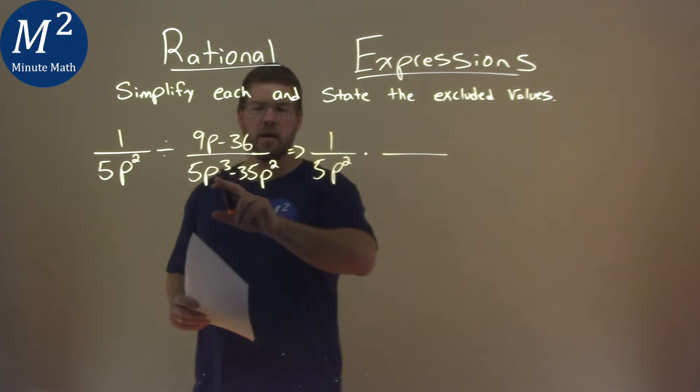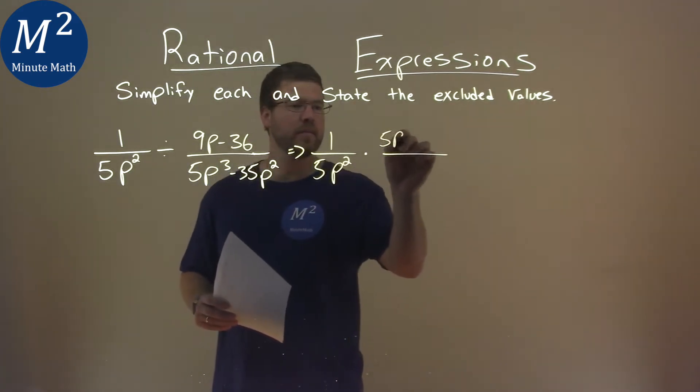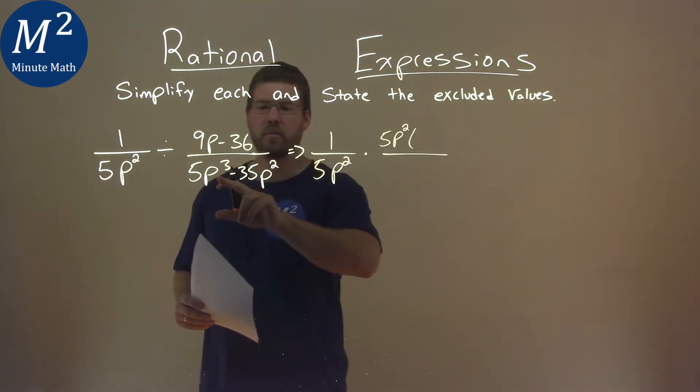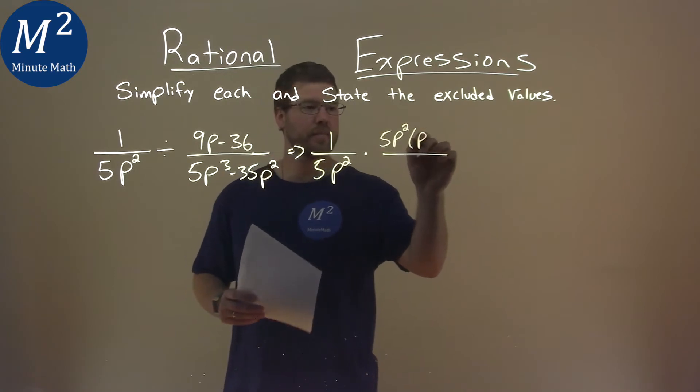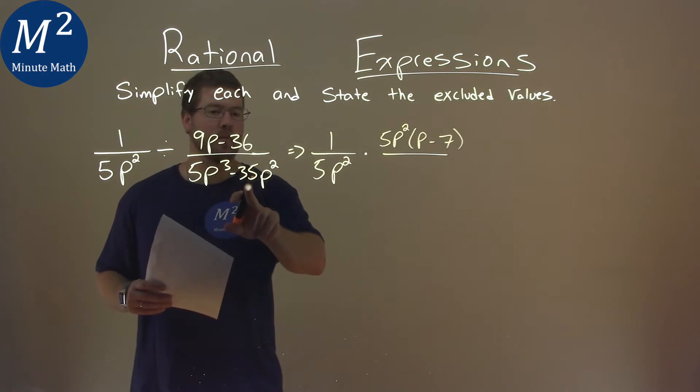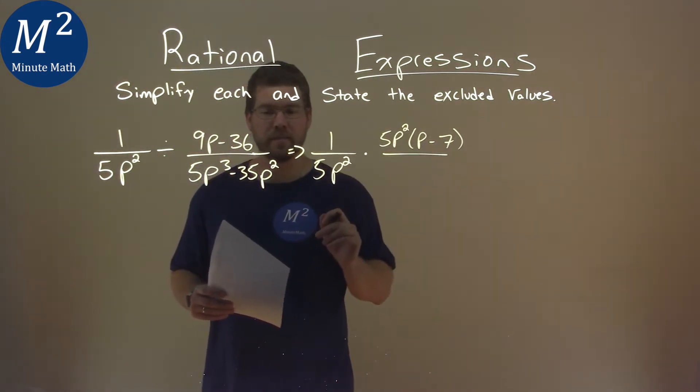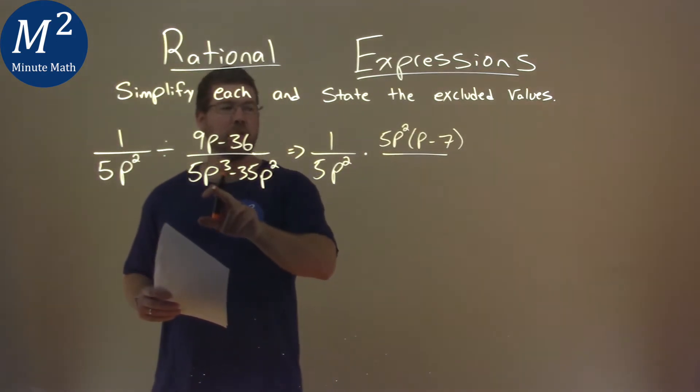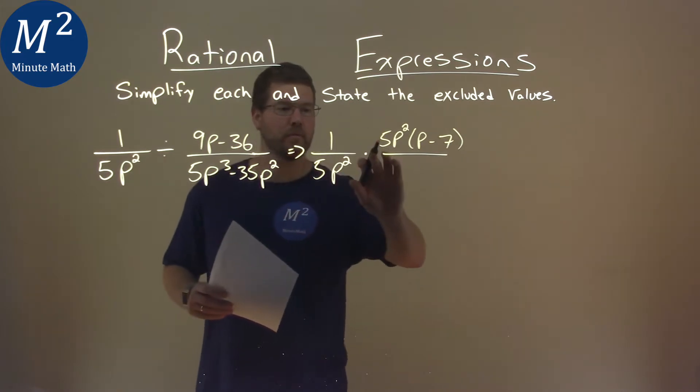This is going up here in the numerator, and if I pull out a 5p squared, I'm left with just a 1p minus 7. So we pull out a 5p squared from 35p squared, and we get a 7, and pull that out of 5p to the third power, and we just have a p. But remember, we're also flipping it.